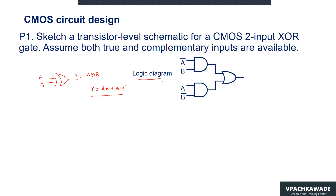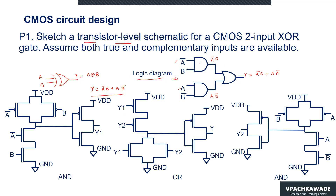The logic diagram for the XOR gate uses both true and complementary inputs: A-bar, A, B-bar, and B. The output of the first AND gate is A-bar·B, the output of the second AND gate is A·B-bar, and the final output Y is A-bar·B OR A·B-bar. Now we are asked to draw the transistor-level schematic for this, which has a first AND gate, a second AND gate, and a third OR gate.